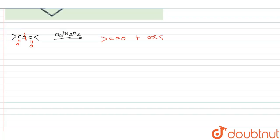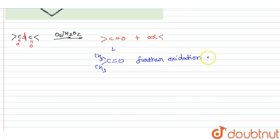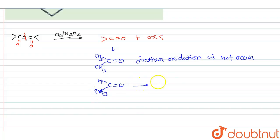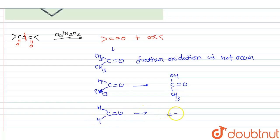But further oxidation of this product depends on the group present. If the product has a ketone group — where both valences of carbon are completed by other carbons (e.g., CH3) — then further oxidation does not occur. But if an aldehyde is present with CH3, then further oxidation takes place and H is replaced by OH, forming a carboxylic acid (C=O, OH, CH3). If formaldehyde is present, it further dissociates into CO2 and H2O as the final product.